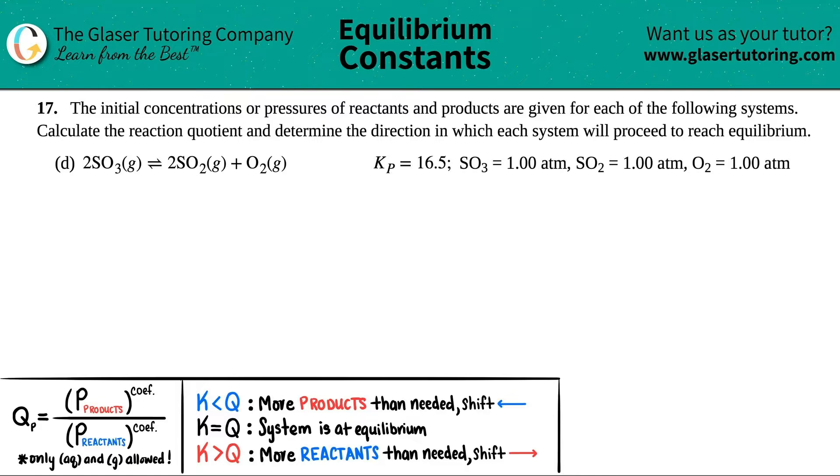Number 17: The initial concentrations or pressures of reactants and products are given for each of the following systems. Calculate the reaction quotient and determine the direction in which each system will proceed to reach equilibrium. Okay, so first things first...